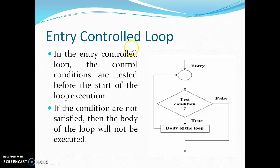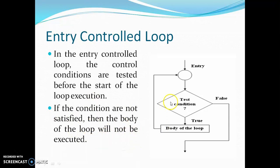In an entry control loop — as shown in the figure — the test condition is specified first, and then the body of the loop follows. In the entry control loop, the condition is tested before the start of the loop execution. If the condition is not satisfied, then the body of the loop will not be executed. If the condition is true, it will go to the body of the loop; otherwise it will exit from the program.